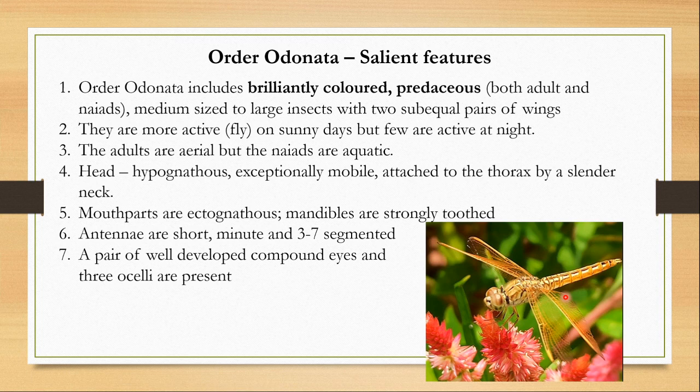The adults are aerial but the naiads or nymphs are aquatic. They reproduce in water, laying eggs in water which hatch into naiads that live in water. When the naiads mature, the adults come out and are aerial — they move around in the sky or sit on trees.